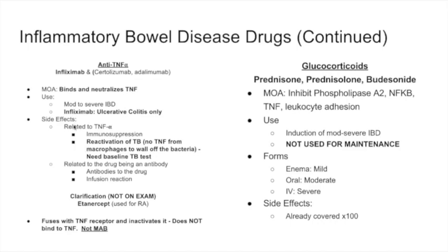What you need to be aware of for exams is the side effects of anti-TNF agents — this is high yield. TNF is secreted from macrophages and is used to wall off bacteria; one of the biggest things walled off is tuberculosis. TNF causes a granuloma around Mycobacterium tuberculosis. If you give anti-TNF, you will get reactivation of tuberculosis. Therefore, patients starting anti-TNF inhibitors need a baseline TB test and monitoring afterward to ensure TB does not reactivate.